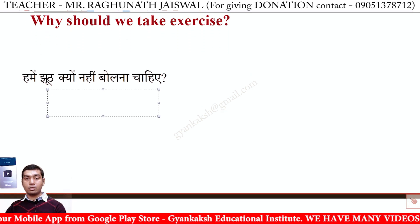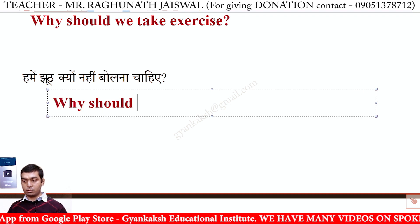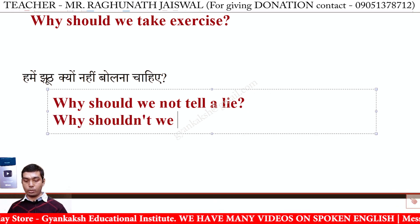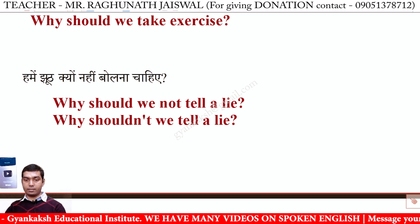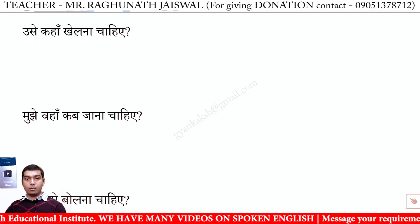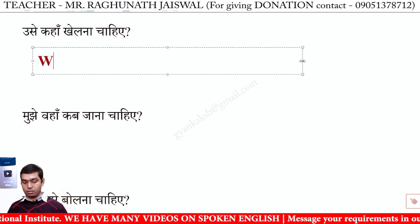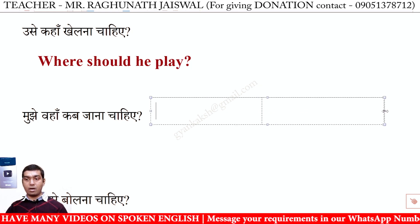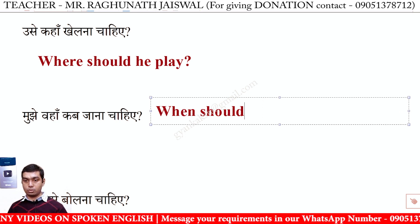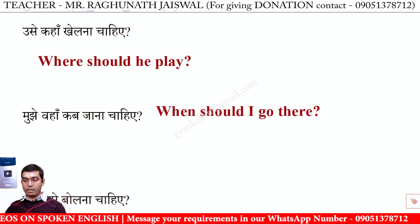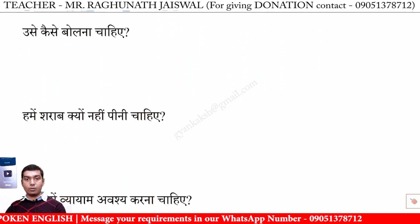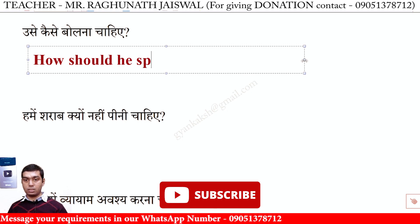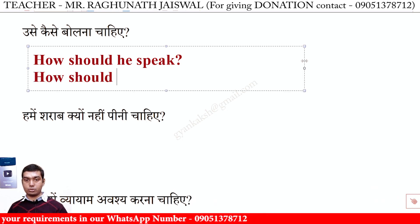हमें झूठ क्यूं नहीं बोलना चाहिए? — Why should we not tell a lie? उसे कहां खेलना चाहिए? — Where should he play? मुझे वहां कब जाना चाहिए? — When should I go there? उसे कैसे बोलना चाहिए? — How should he speak?